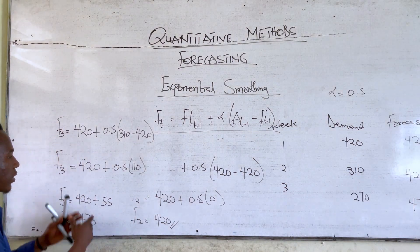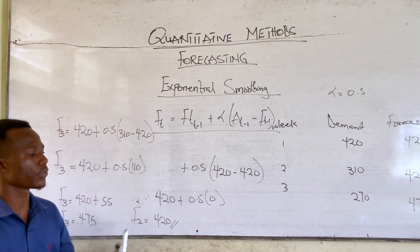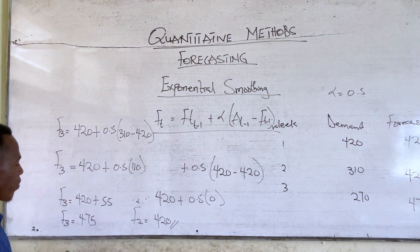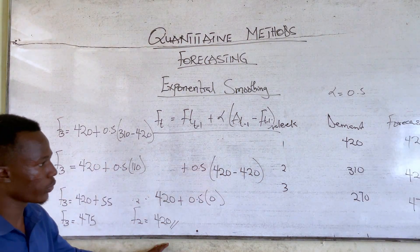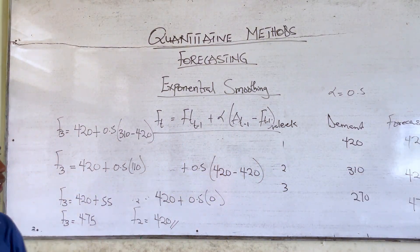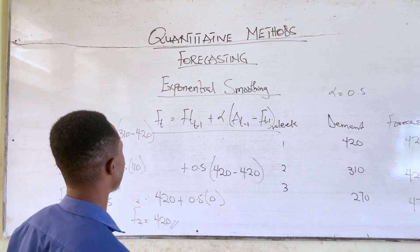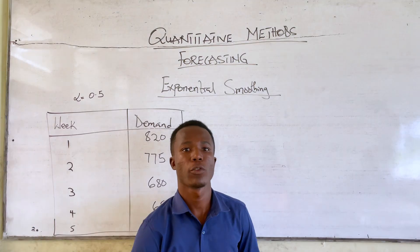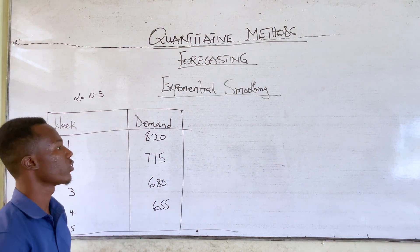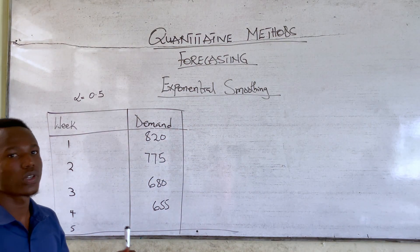So that is how to calculate a forecast using exponential smoothing. The forecast for week 3 is 475, week 2 is 420, and week 1 — because we don't have any past history or actual periods — we use the same demand as the forecast. Now let's pick another question and solve it for a better explanation.